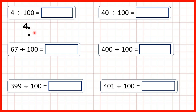We're dividing by a hundred which has two zeros, so the digit is going to move two squares. If we copy this 4 down one, two squares to the right, we now have some empty squares either side of the decimal point. Remember the digit after the decimal point is the tenths digit, so we need to write zero there to show that this 4 is now in our hundredths place value column. The digit before the decimal point is the ones digit, so we need a zero there as well because we can never have an empty ones column.